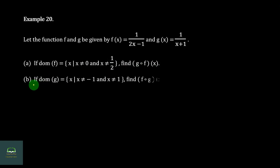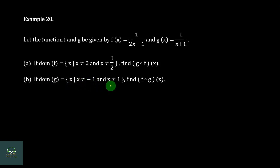Number 1: if the domain of f is the set of x such that x is not equal to 0 and x not equal to 1 by 2, find G∘F of x. Number 2: if the domain of g is the set of x such that x is not equal to minus 1 and x not equal to 1, find G∘F of x.